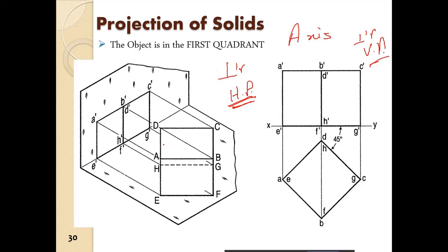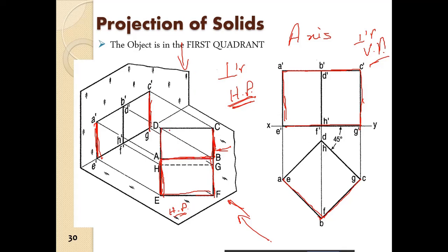So this is a cube which is resting on the horizontal plane. When we see from this side, we will see the ABFE plane and the BCGF plane, which is hidden. So when we see from this side, we will see this side of the view and this side of the view — that will be projected here. So the A B C D plane is drawn here for the top view, and E F G H are written inside as those are hidden.